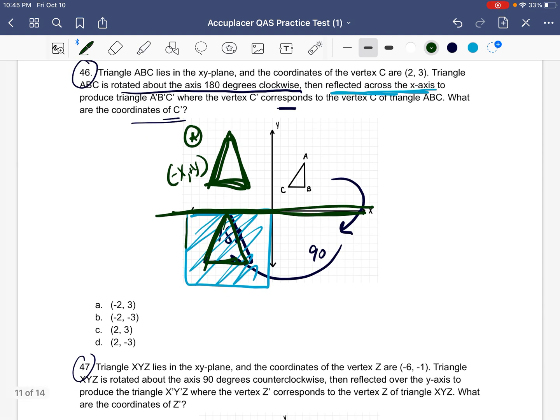So all you have to do is look at these answers and see in which one of these answers, A, B, C, or D, is the X negative. Well, in A or B. So the answer can't be C or D. And then we need a positive Y. So the answer must be A because it's a negative 2 and a positive 3. A negative X and a positive Y.